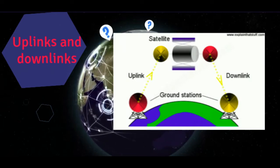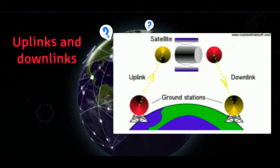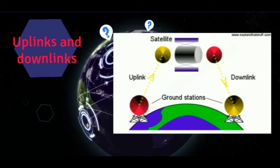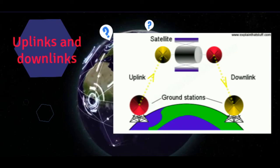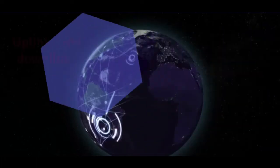Finally, there's the downlink, where data is sent back down to another ground station elsewhere on Earth. Although there's usually just a single uplink, there may be millions of downlinks - for example, if many people are receiving the same satellite TV signal at once.